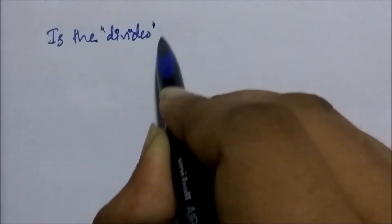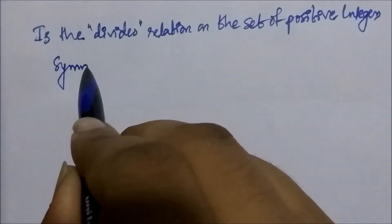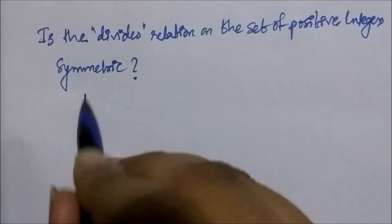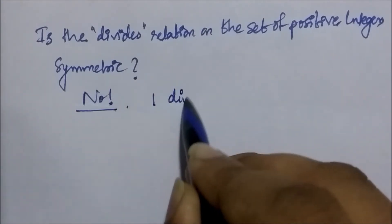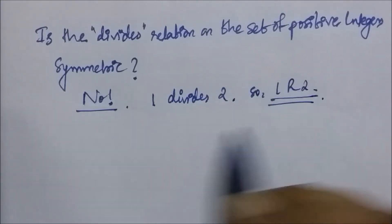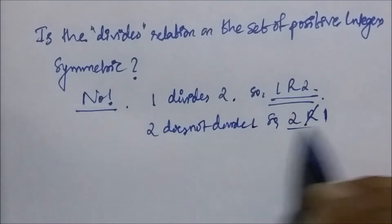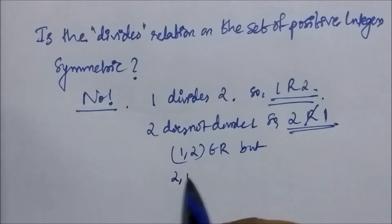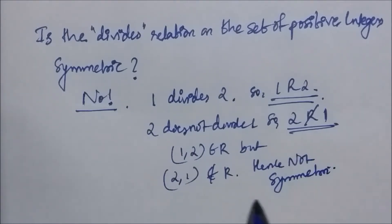Is the divides relation on the set of positive integers a symmetric relation? No. Because 1 divides 2, so 1 is related to 2, but 2 does not divide 1, so 2 is not related to 1. We have (1,2) in the relation but (2,1) is not present, and hence this relation is not symmetric.